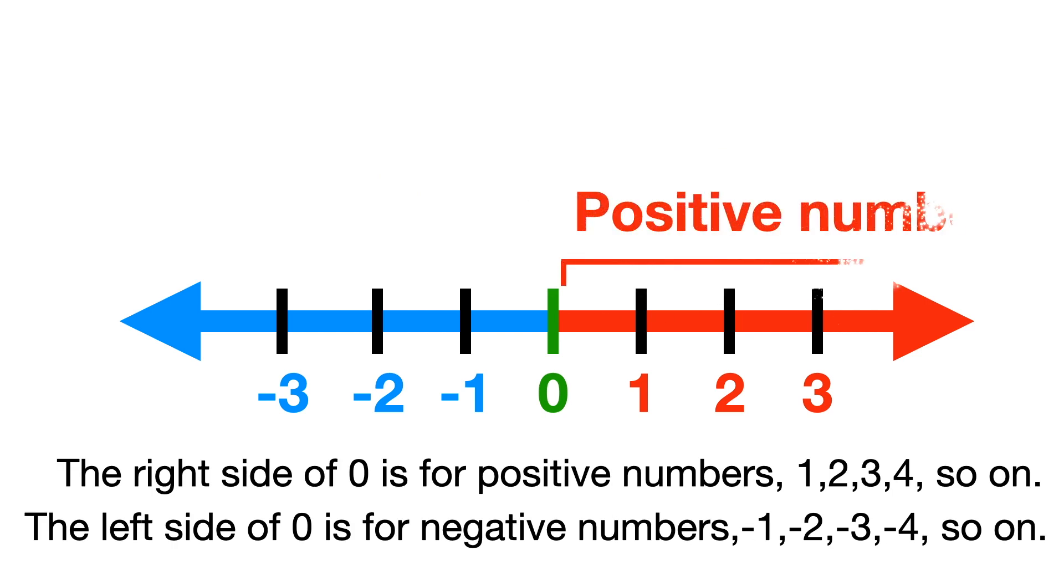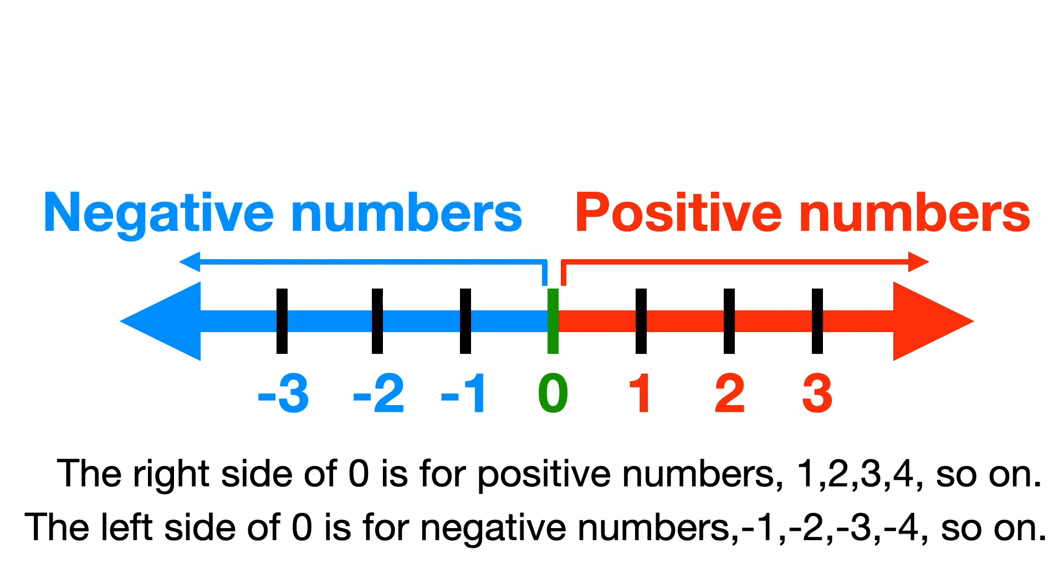The right side of 0 is for positive numbers 1, 2, 3, 4, and so on. The left side of 0 is for negative numbers, minus 1, minus 2, minus 3, minus 4, and so on.